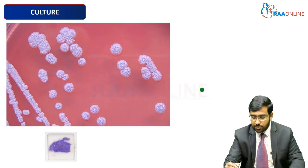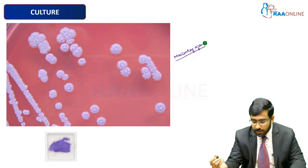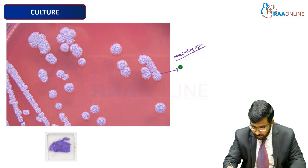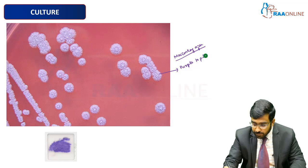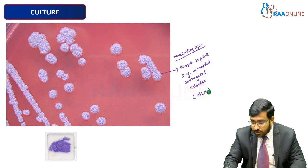The next agar is a pink gel — this is going to be the MacConkey agar. On MacConkey agar, we have purple to pink, dry, wrinkled, corrugated colonies.